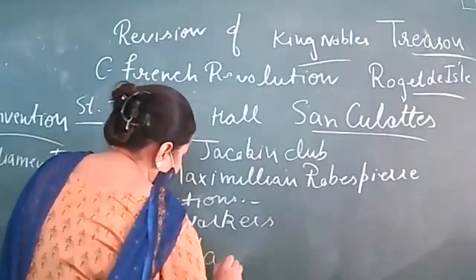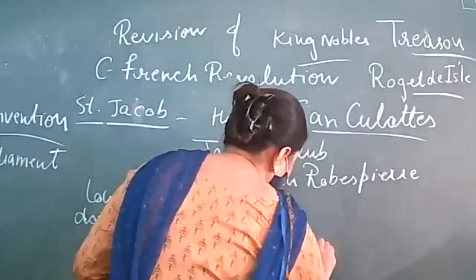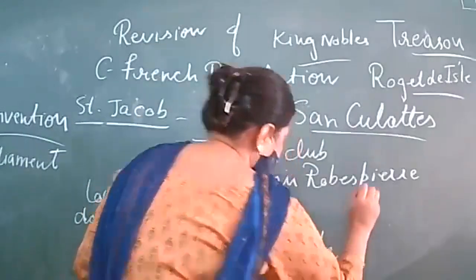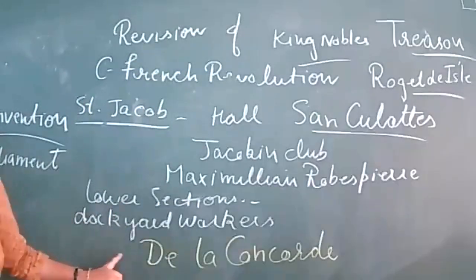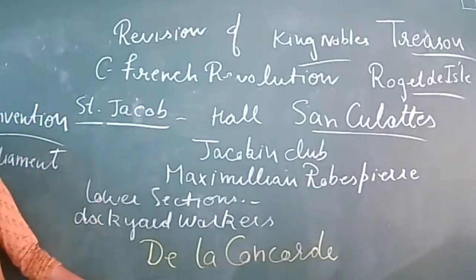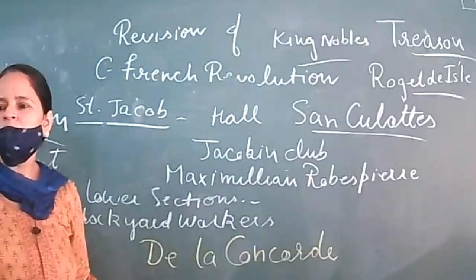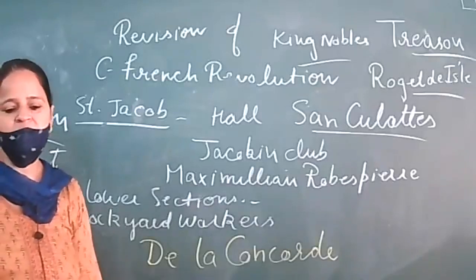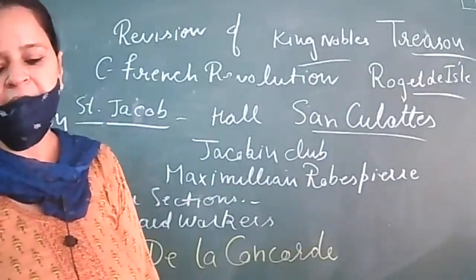21st January 1793 is a very important date in French history because on this date Louis XVI was executed. The place was Place de la Concorde in Paris — remember the name of that place.